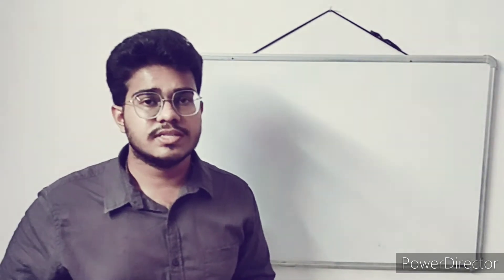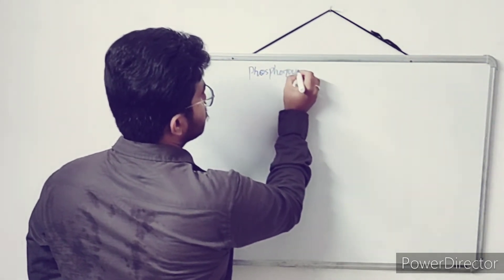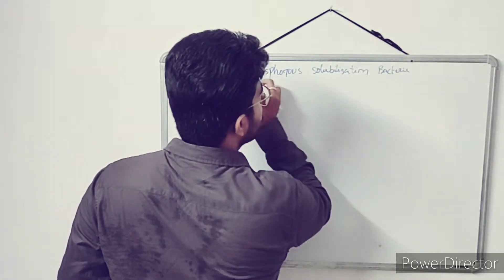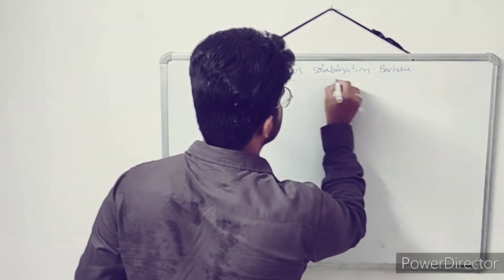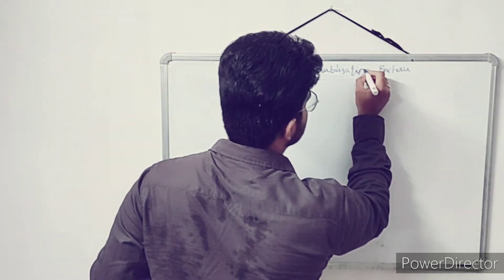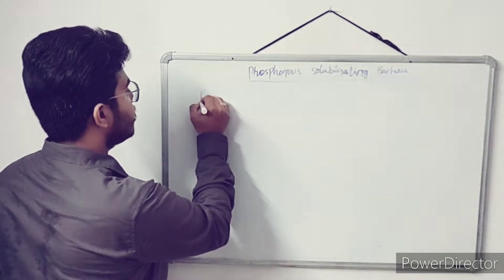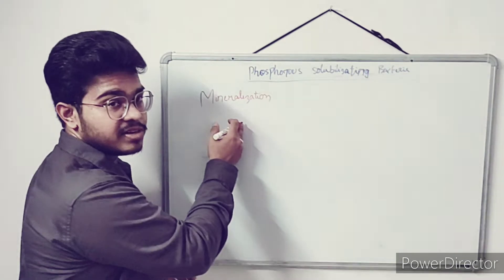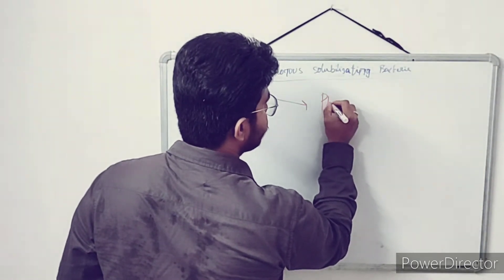In different exams — government or different state level university exams of agriculture — we get a question like: name any phosphorus solubilizing bacteria, or name any phosphorus solubilizing fungi, or what is the C-to-N ratio? So before going to phosphorus solubilizing bacteria, let us understand: during mineralization, as the chemical compounds break down, a phosphorus element is released.